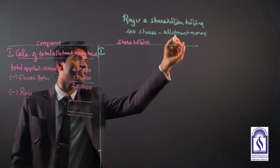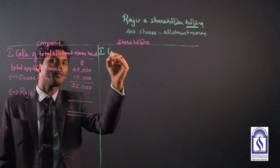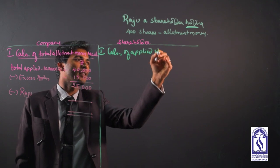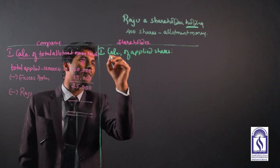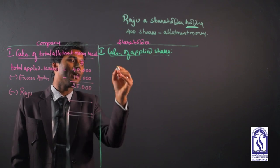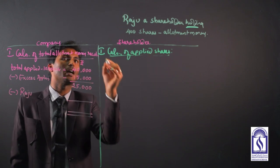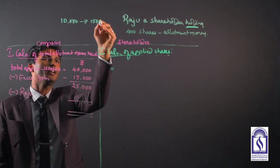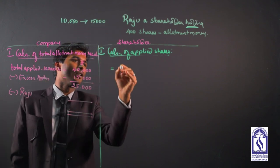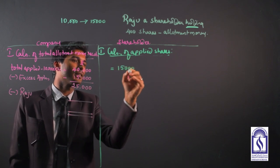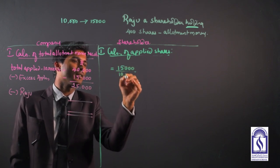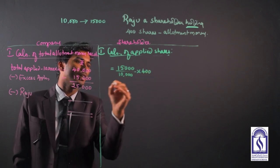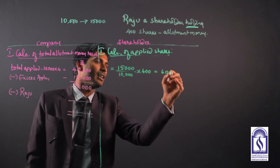Step number one: since holding is given, holding is nothing but allotted. Then we have to find calculation of applied shares. This is again the most confusing part for most of the students. If we want to find applied, find out the total applied. Remember our part, 10,000 shares, 15,000 is remaining. So now we want to find applied. So total applied are 15,000 divided by 10,000 into number of allotted 400. It gives you around 600 shares. So Raju has applied for 600 shares.